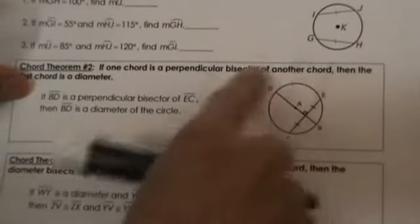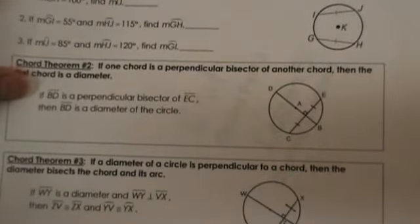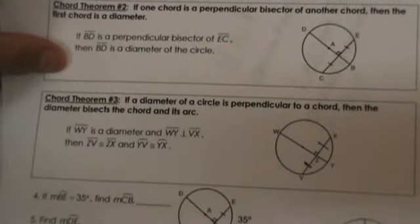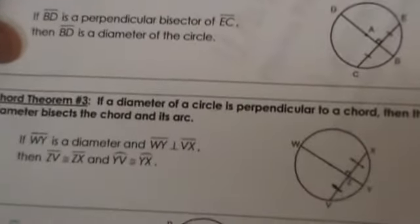So you have to have perpendicular and you have to have bisecting and then you'll have this theorem. Those are the two pieces of information you need to use this theorem. It's pretty easy once you get the hang of it. Let's zoom out and look at a couple of practice problems here.